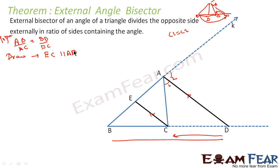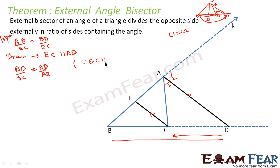Why draw EC parallel to AD? Because we can apply the Basic Proportionality Theorem using that. Applying the theorem, since EC is parallel to AD, BD by DC will be equal to AB by AE. So BD by DC is equal to AB by AE. Now we have to prove that BD by DC is equal to AB by AC.